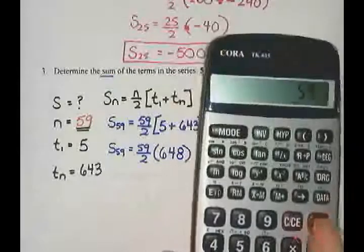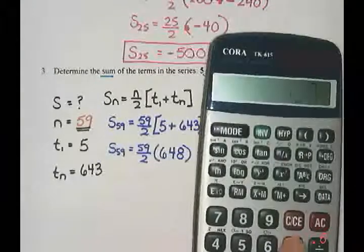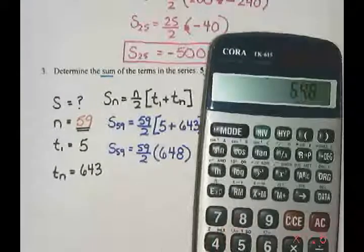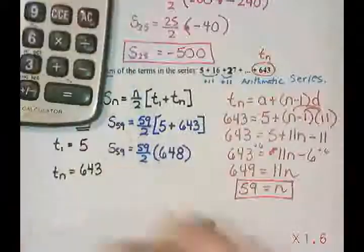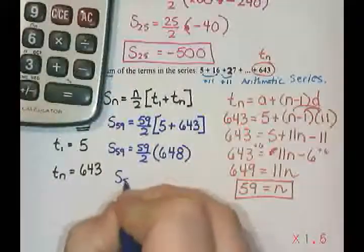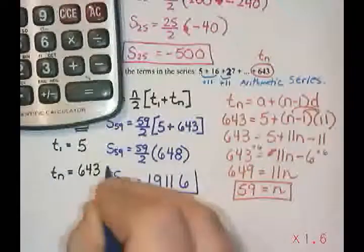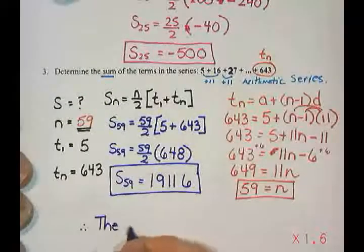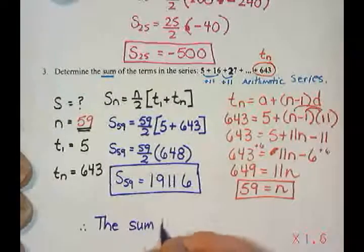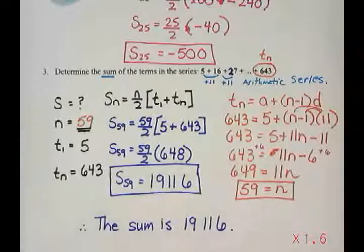And then on my calculator, I'm going to take 59 divided by 2 times 648, which is 19,116. So the sum of the first 59 terms is 19,116.